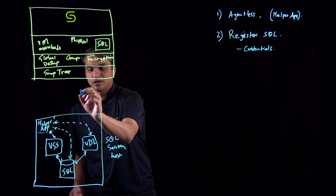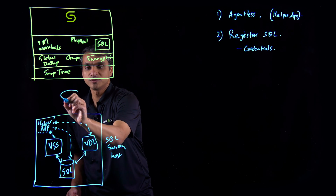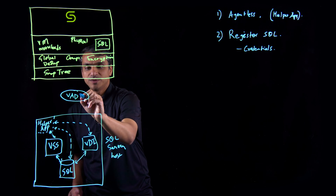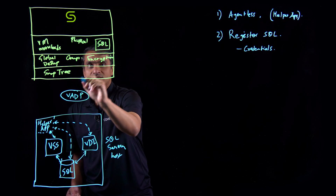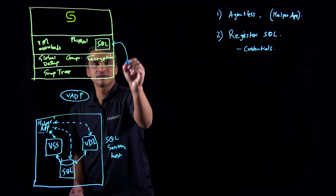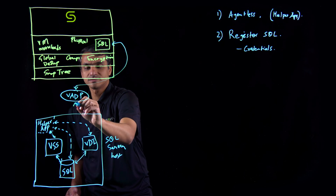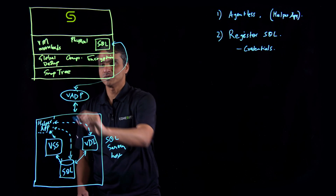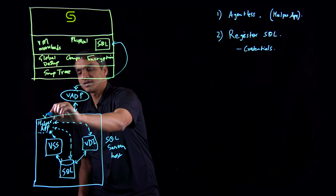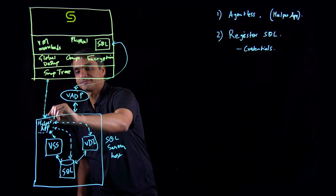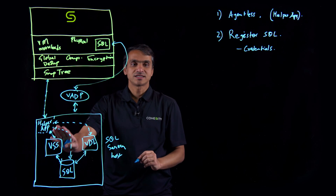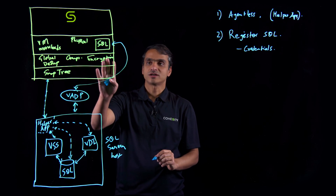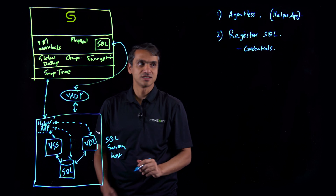In order to load and unload the helper app and to perform some VM-specific operations, we make use of the VADP interface provided by VMware. Once the helper app is up and running on the SQL server, we interact with it as well. The helper app acts as a dump agent and all the orchestration is driven by the Cohesity cluster.